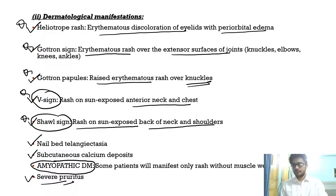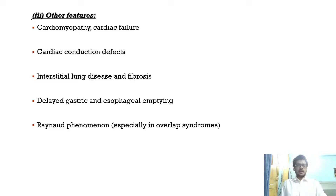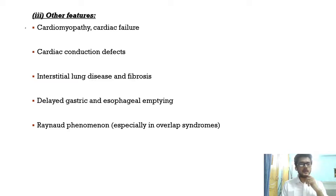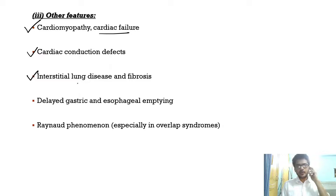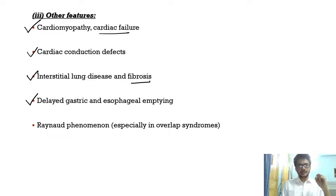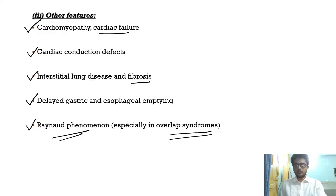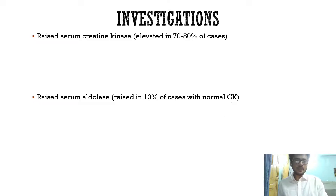Because of involvement of the cardiac musculature, the patient can develop cardiomyopathy, cardiac failure, and cardiac conduction defects. Patients can also develop interstitial lung disease and fibrosis. Involvement of visceral smooth muscle can cause delayed gastric and esophageal emptying, and Raynaud's phenomenon can be seen especially in overlap syndromes.